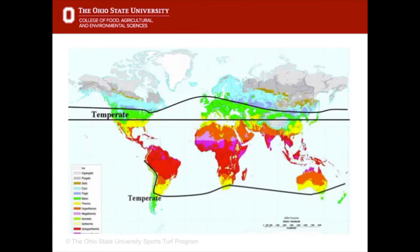As you can see from this world map, the regions that are green are the temperate zones and the majority of the cool season grasses are grown in these areas, which would include North America and Europe.